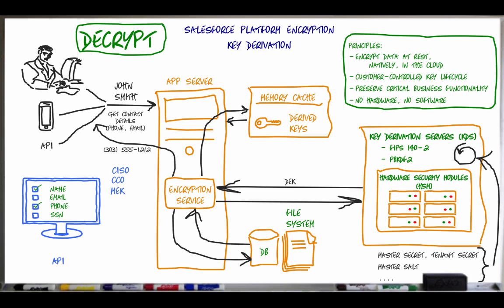So that is how platform encryption encrypts data at rest natively within the Salesforce platform, while giving customers control of the key lifecycle while preserving critical business functionality without requiring any on-premise hardware or software. For more detail on this topic, including how Salesforce encrypts search indexes and preserves critical related functionality, read the Shield Platform Encryption Architecture Whitepaper, available at www.salesforce.com. Follow me on Twitter at MoreMikeSmith. Thank you for watching.